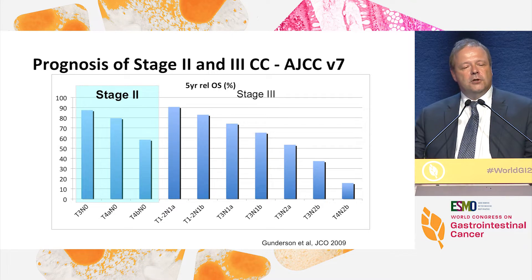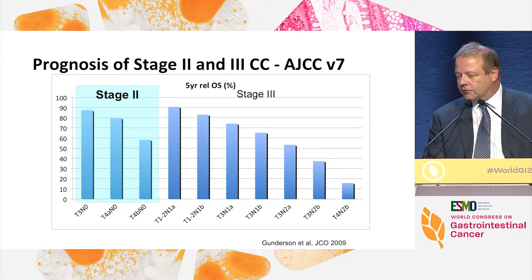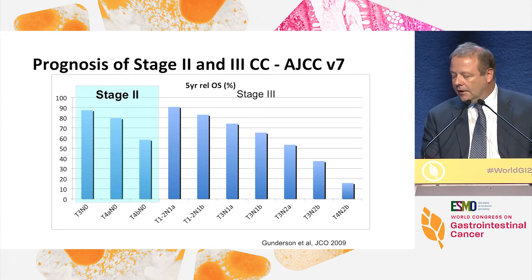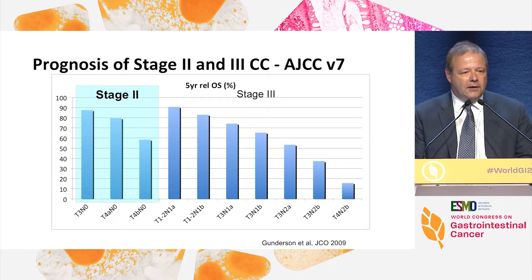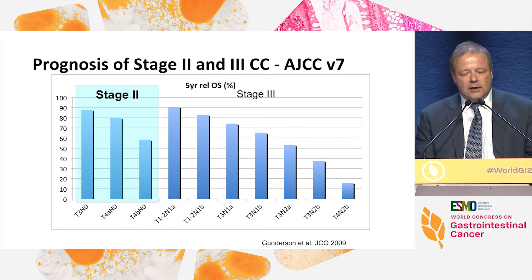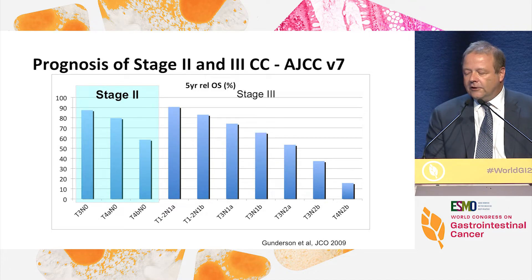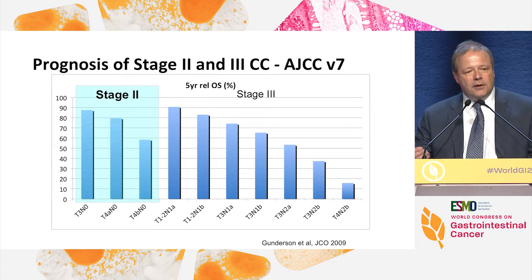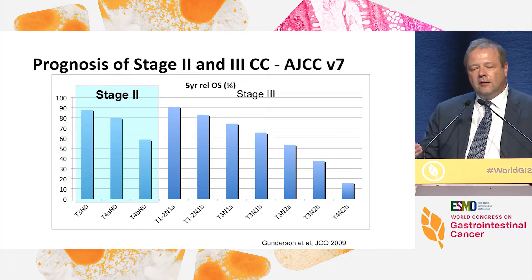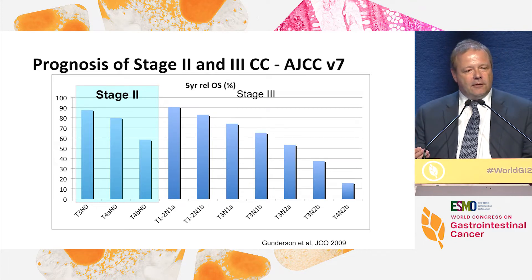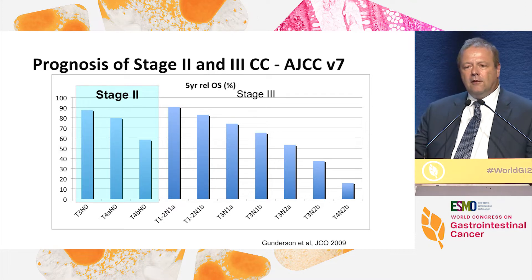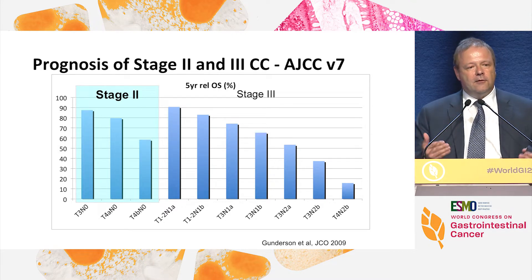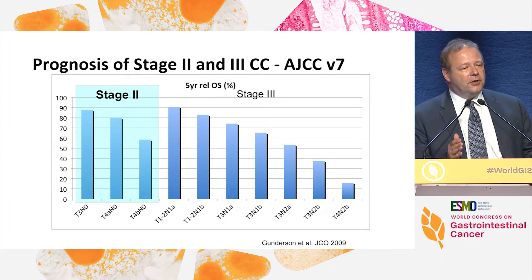First of all, I think we all have the impression that stage two patients do so much better than stage three patients. But when you look at the AJCC version seven classification and publication in 2009, which really set our TNM classification, you can see that some stage two patients — in particular T4B tumors — actually do worse than some stage three patients.